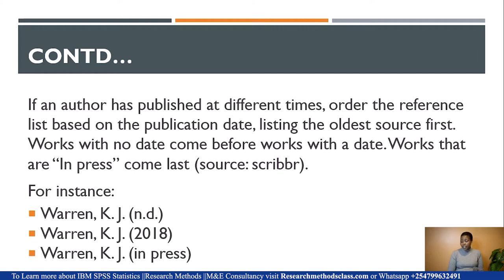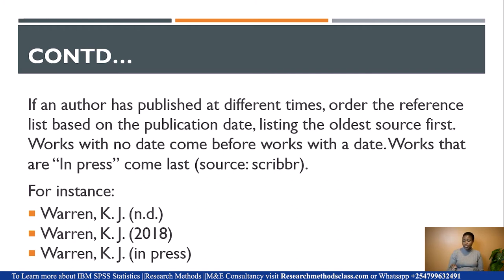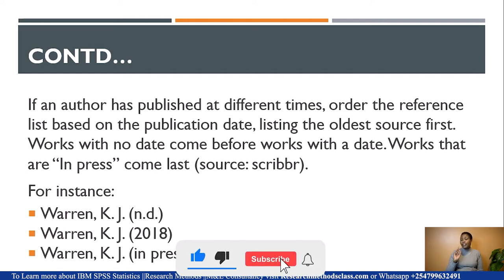If an author has published at different times — for example, the same person has published in 1967, 2000, and 2020 — or if they have undated works or works in press, then order the reference list based on the publication date, listing the oldest source first. In the 6th edition we were listing the newest first, but now we list the oldest first. If the work has no date, it comes before the work with a date, and if works are in press, they come last. For instance, you have material by Warren: the first one is not dated, so it comes before the one with a date, and the one in press comes last.